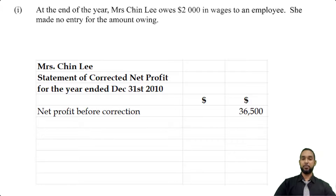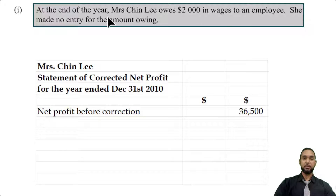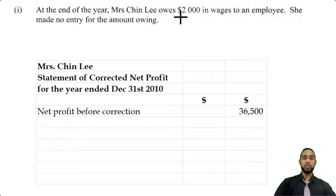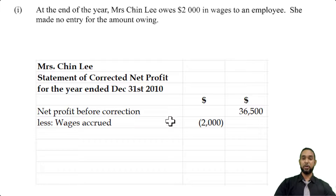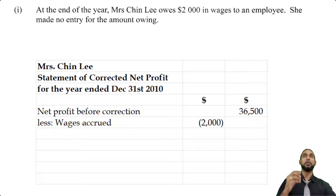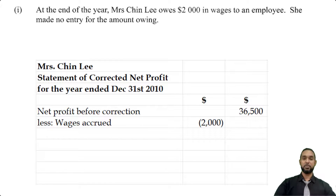Going back to item one: at the end of the year she owes two thousand in wages and she didn't make any entries for the amount owing — that's an accrual. Normally we'd add the accrued amount to the expense in the income statement, which increases the expense. So when we include it here we subtract it — less wages accrued. The accrued wages increase the expense amount, which decreases profit, so that's why we're subtracting here.